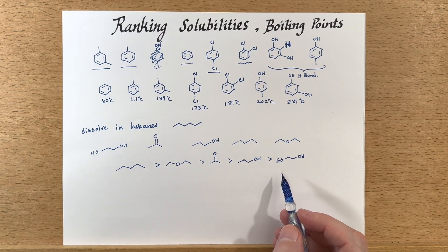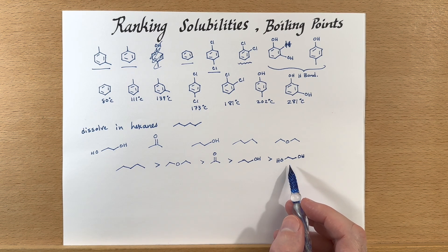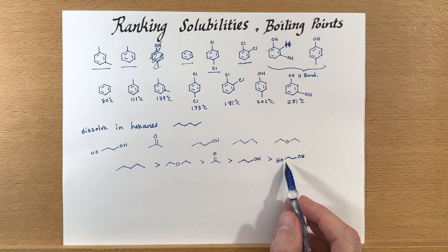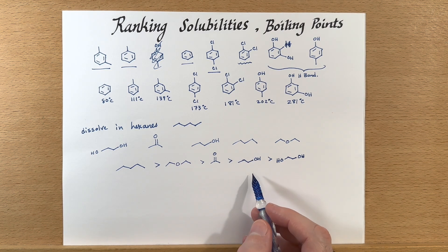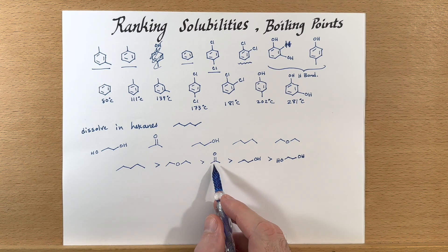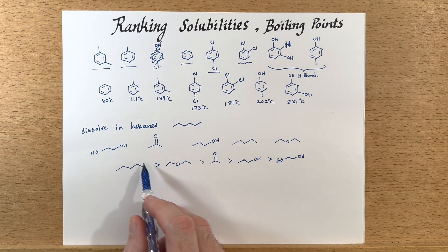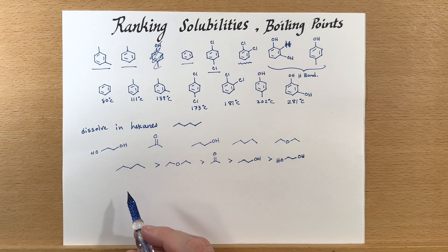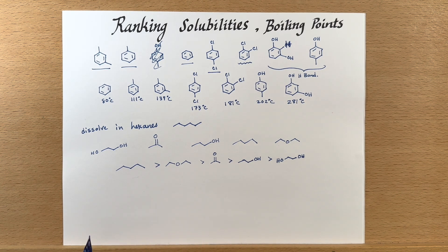Of course, this order would be completely reversed if we were in water, because ethylene glycol would prefer to interact with something that hydrogen bonds. In water, 1-propanol and acetone would dissolve a little bit, not much — same with diethyl ether — and pentane is not going to dissolve very much at all in water.